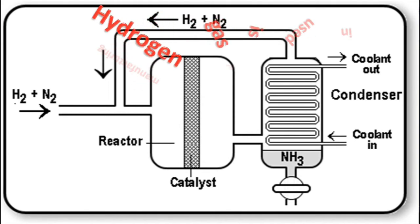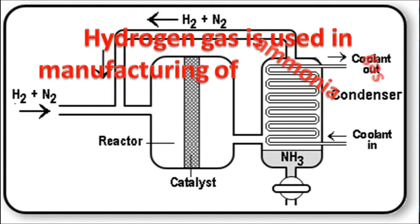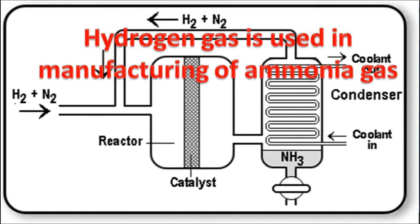Uses of hydrogen: Hydrogen gas is used in manufacturing of ammonia gas by Haber process. In this process, hydrogen and nitrogen combine to give ammonia gas which is used in manufacturing of chemical fertilizer.